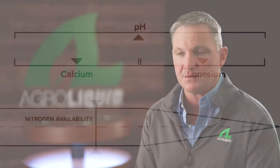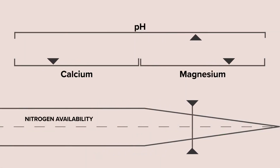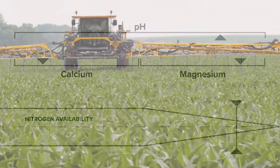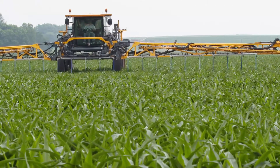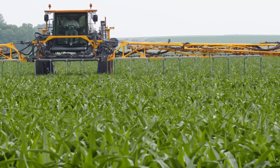But if I have a CEC of 25, 30, or 35, I certainly want to keep my magnesium around that 13, 14, or 15 percent base saturation. The higher I get above that, my nitrogen utilization goes down drastically, causing me to apply more nitrogen to achieve the same yield goals as I would have if I had been down around 15 percent.